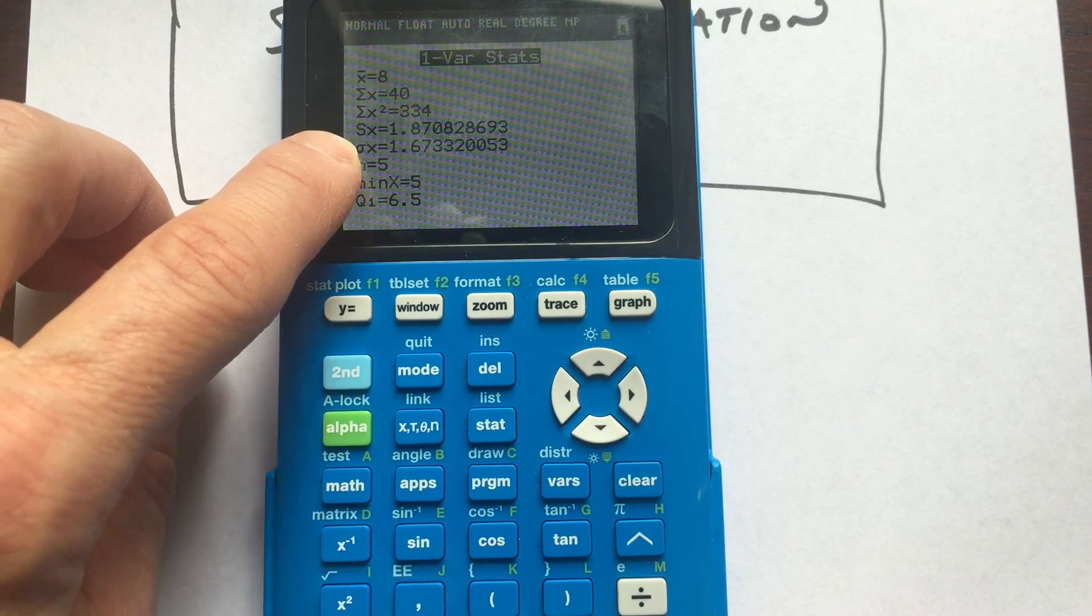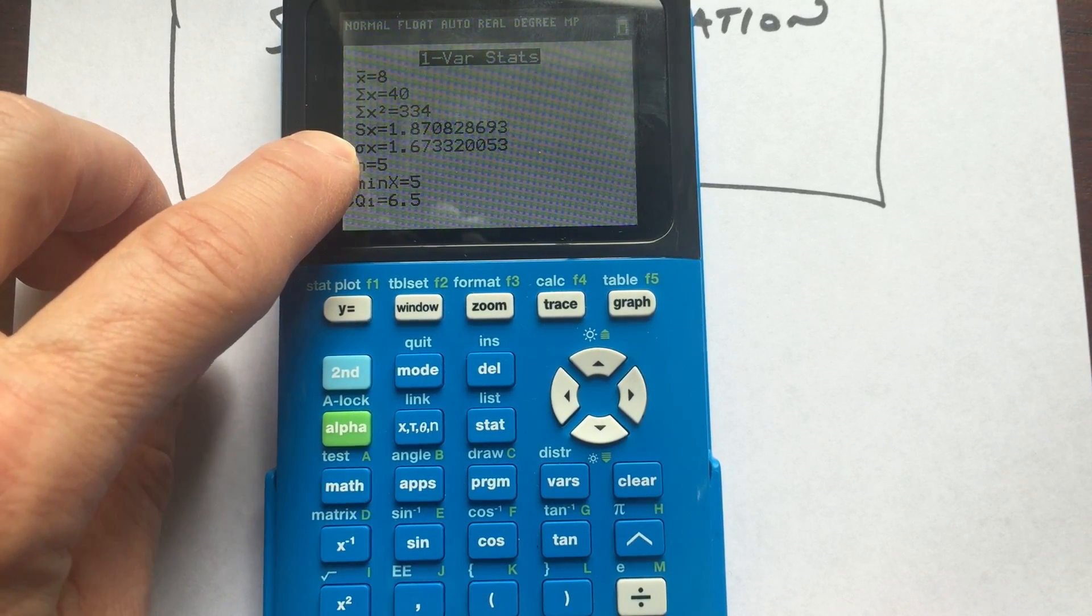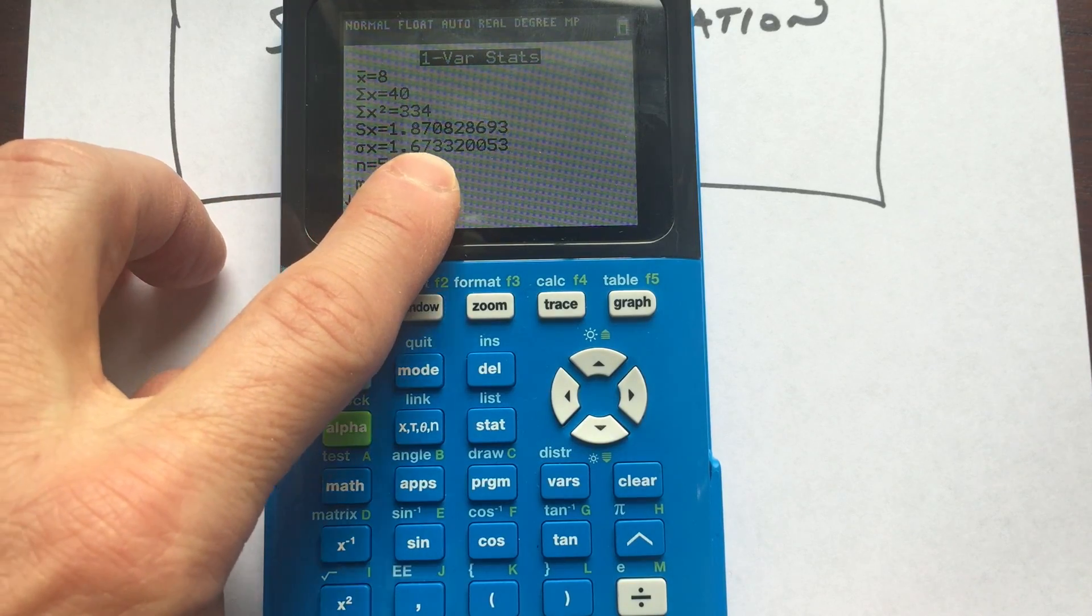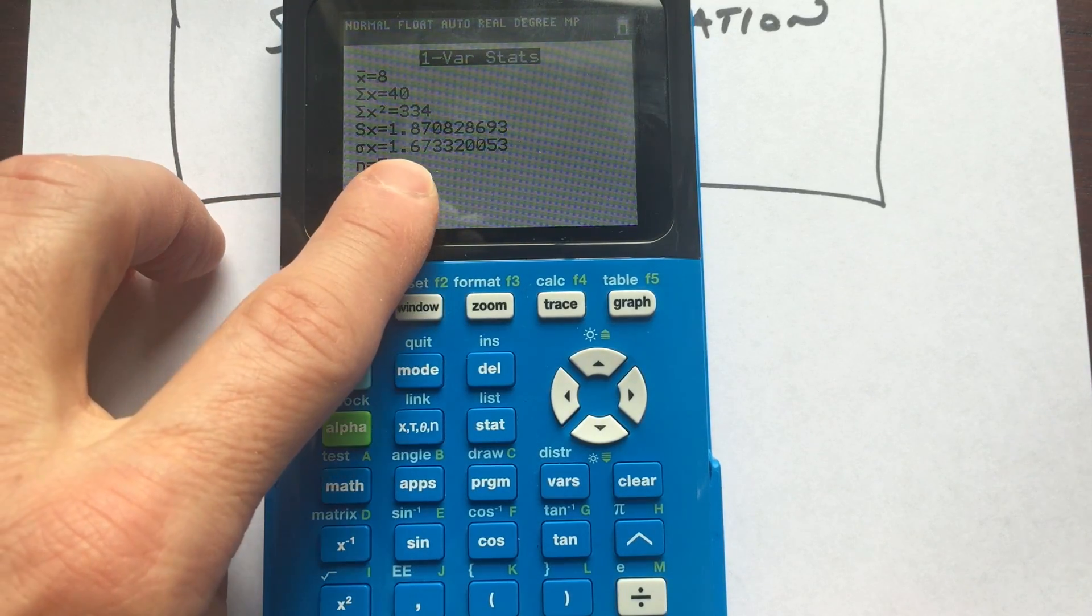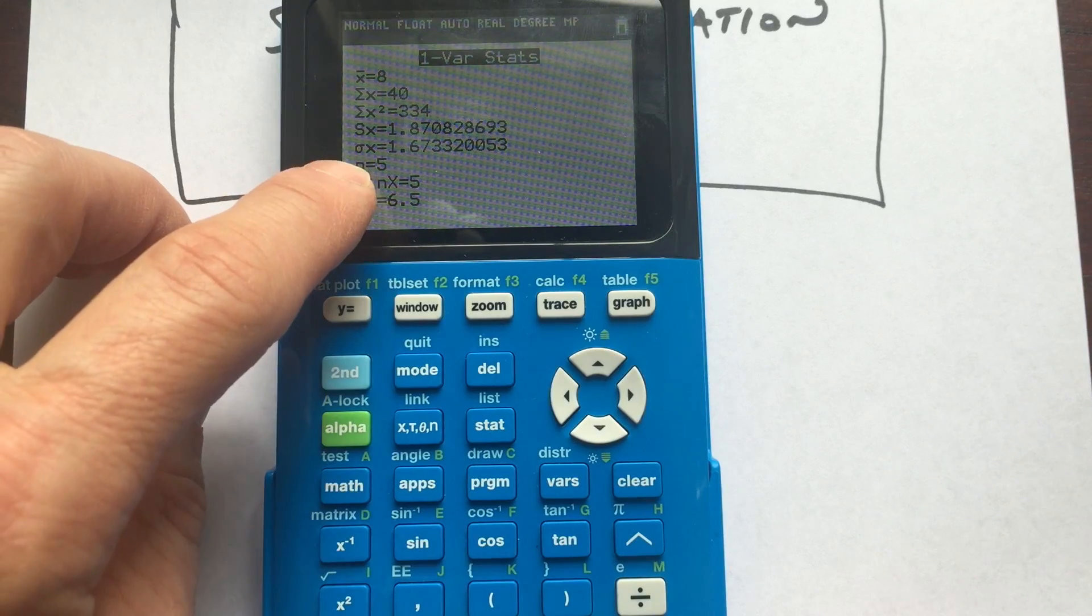But the one that we're going to be using is the one here with the sigma, the little circle, the standard deviation, that's 1.67. So that gives you an idea of how spread out the data points are from the mean.